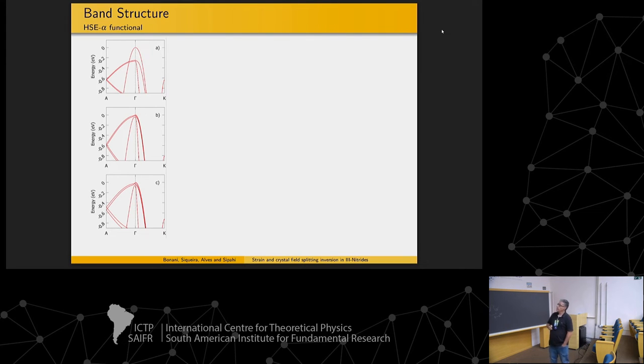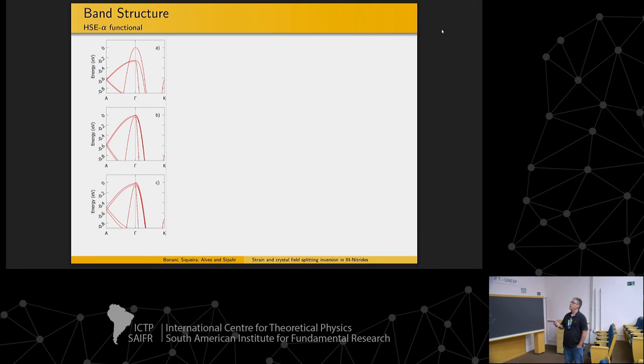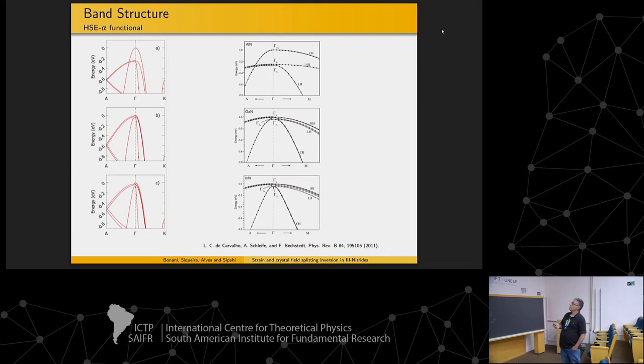So let me just show the band structures. You remember we have this inversion here. Usually in the literature when I use GW, it's much more expensive than the one I use. I have this small difference here that disappears, but it's GW, people. Ten times more or even more, Marilia can say, expensive than the ones I'm calculating. This is good enough.